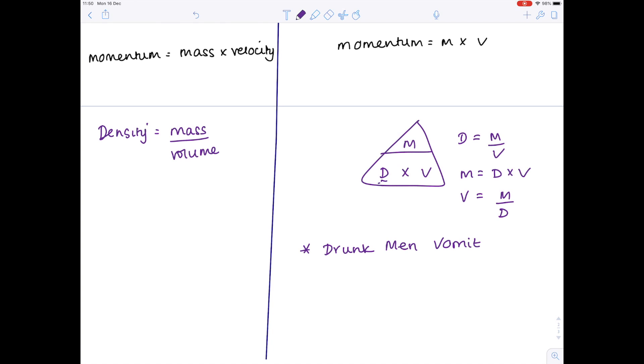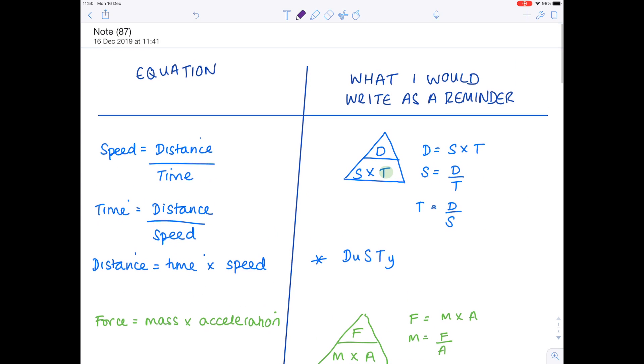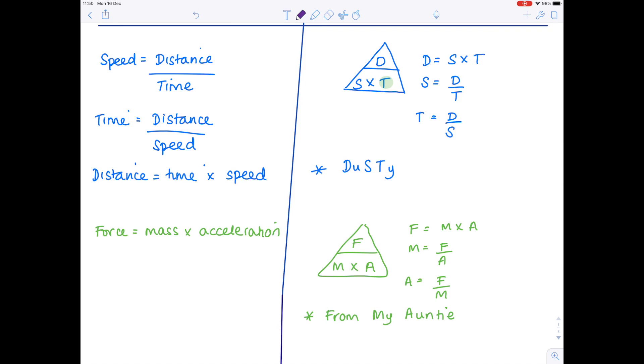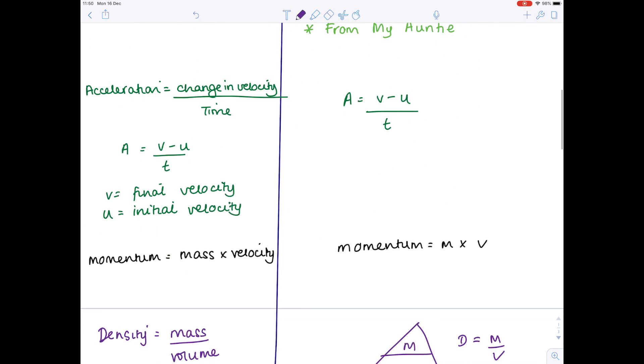Sorry, it's disgusting, but helpful to remember. And because they're drunk, the D goes on the bottom. Whereas if we looked up here, when I said dusty, the D went on the top. From my auntie, the F went on the top. So make sure your letters are in the right order.